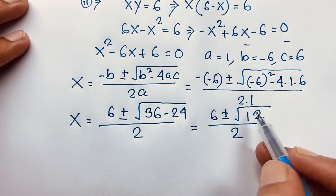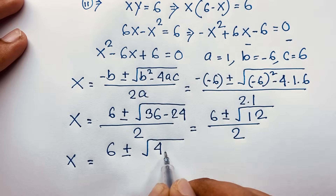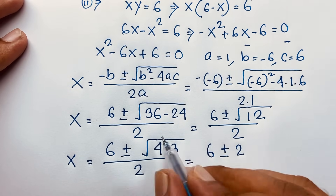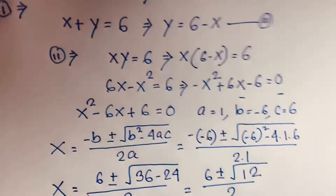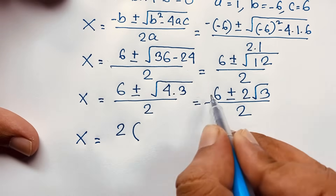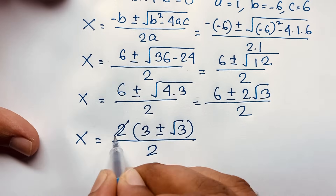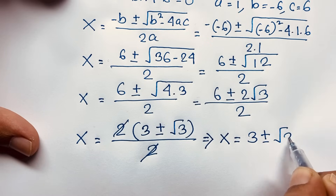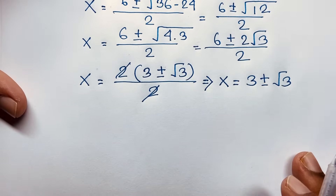Now if I evaluate this square root, x is equal to 6 plus or minus square root of 12, which is 4 times 3, over 2. So it is 6 plus or minus square root 4 times square root 3, which is 2 root 3, over 2. Separating the fraction, 2 is common: 6 divided by 2 is 3, plus or minus 2 divided by 2 is 1, times square root 3. The 2s cancel out, and we find x is equal to 3 plus or minus square root 3. Both values are real solutions with no complex numbers.